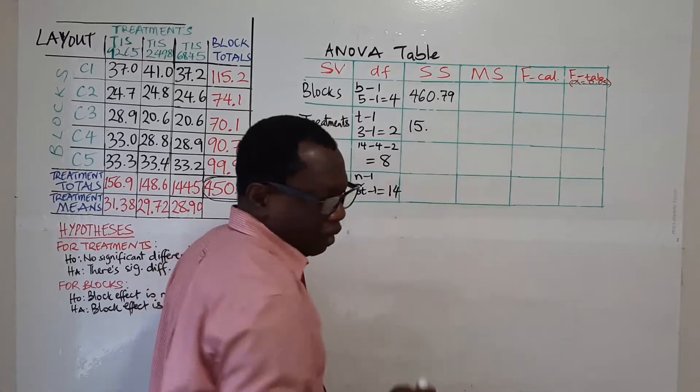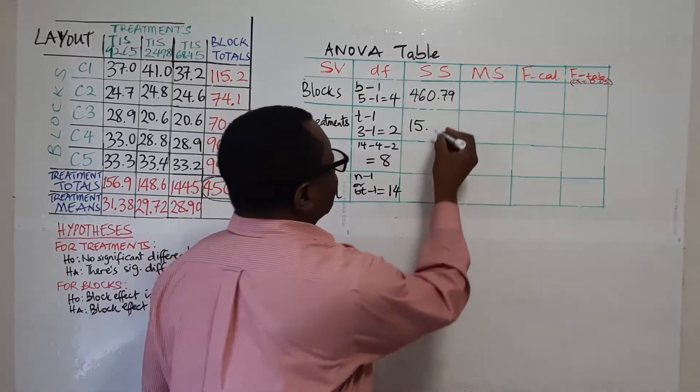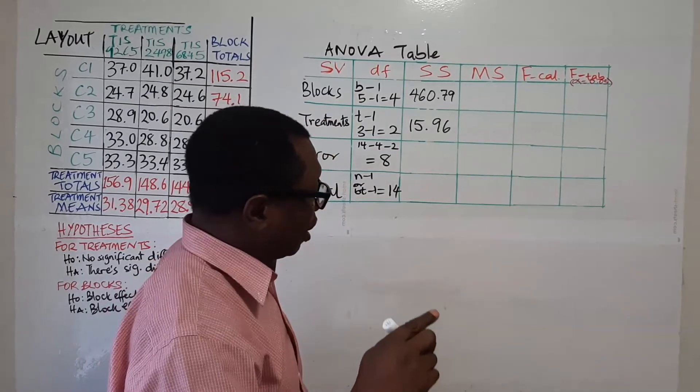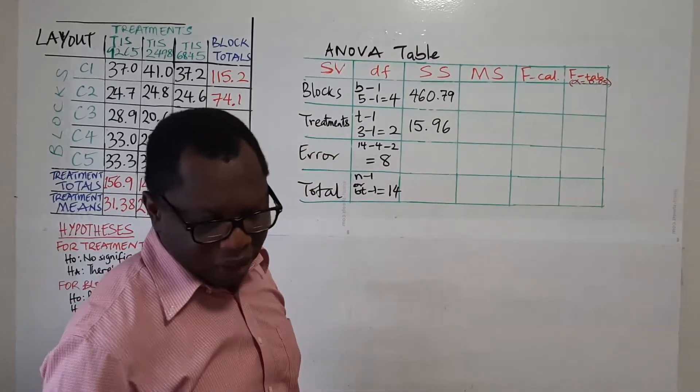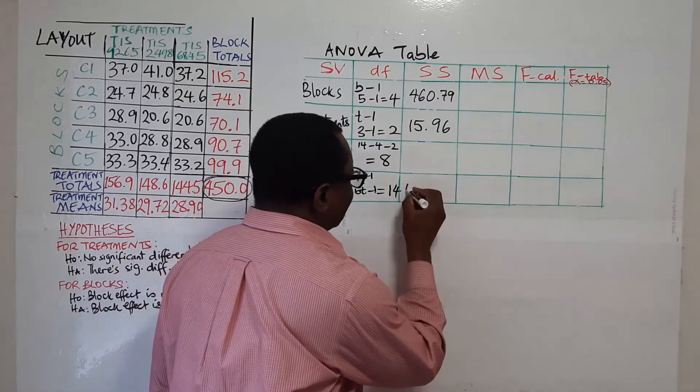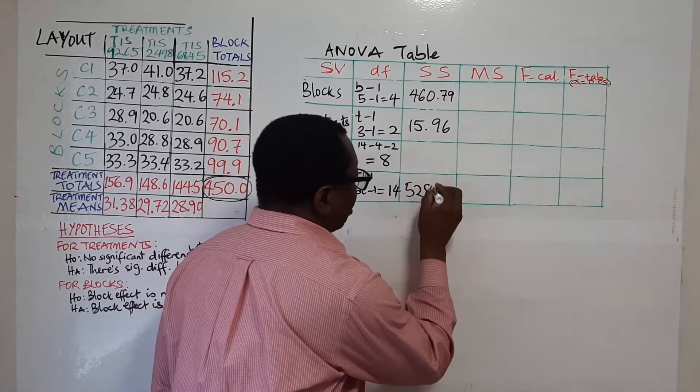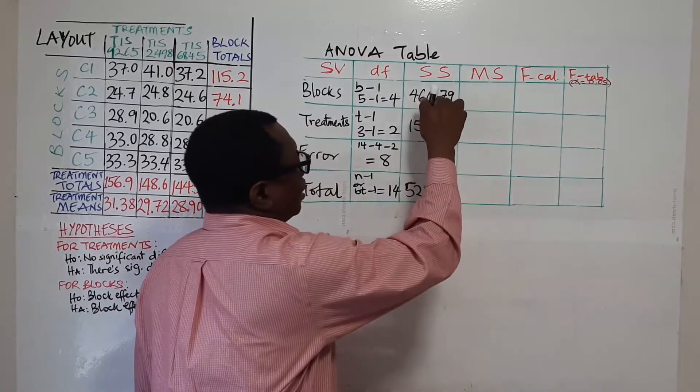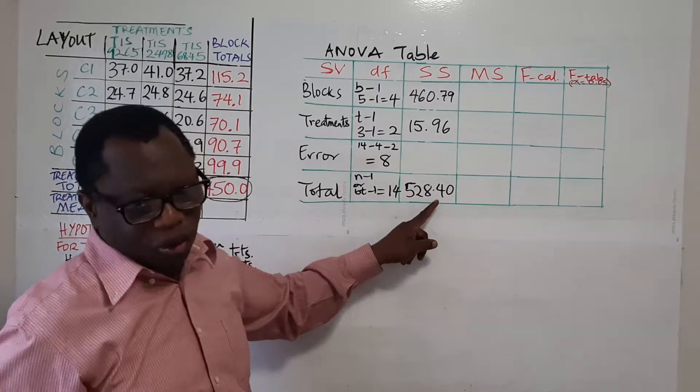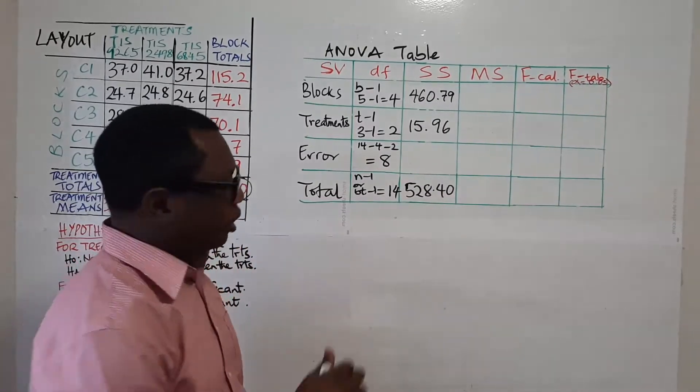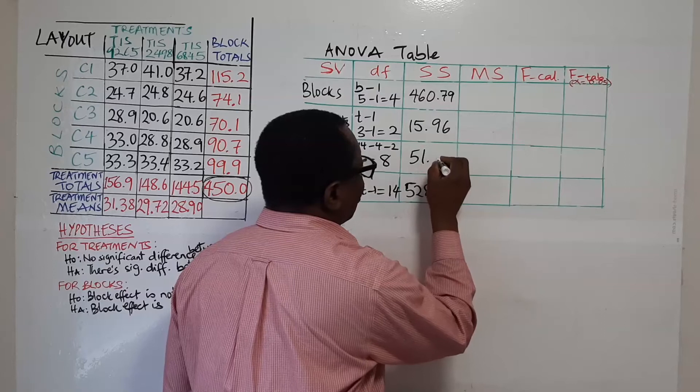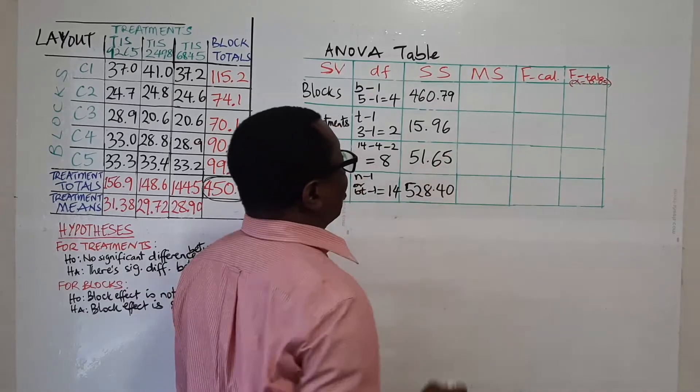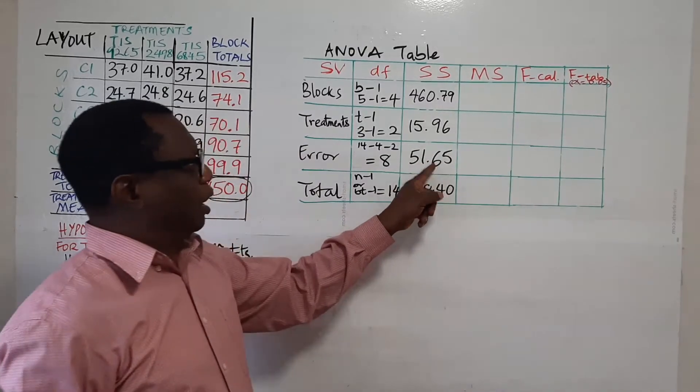We have 15.96 and our SS total was 528.40. We then subtracted this and this from that total. And that gave us 51.65. Yes 51.65. That was what we obtained.